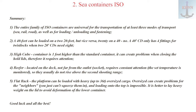Summary: One — the entire family of ISO containers is universal for transportation across at least three modes of transport: sea, rail, and road, as well as for loading/unloading and fastening. Two — a 40-foot can be loaded on two 20-foot units, but not vice versa; a 40-foot DC only has four fittings for twist locks, while two 20-foot units need eight.